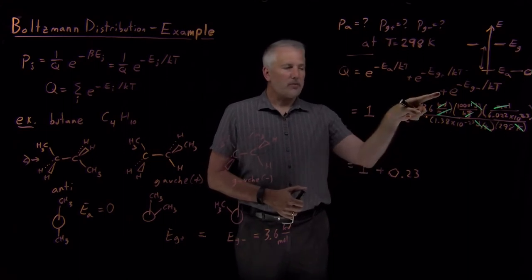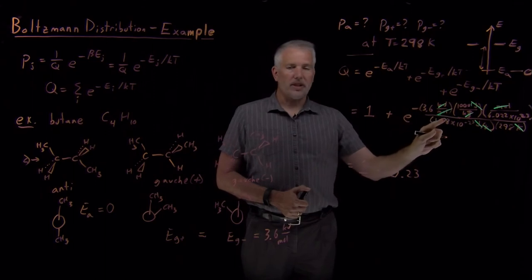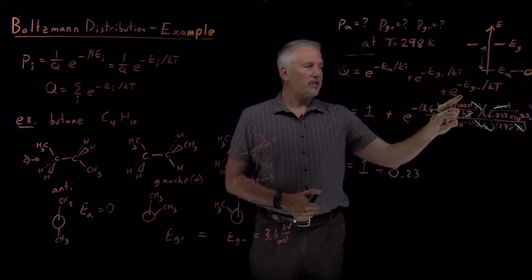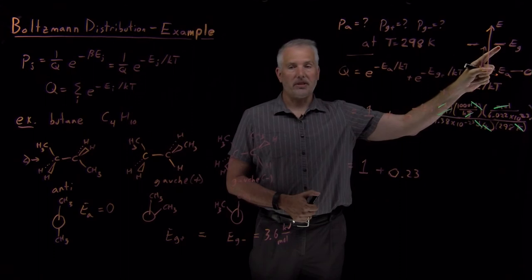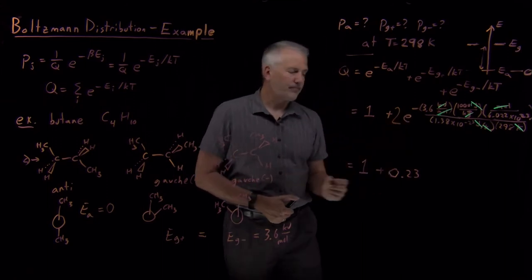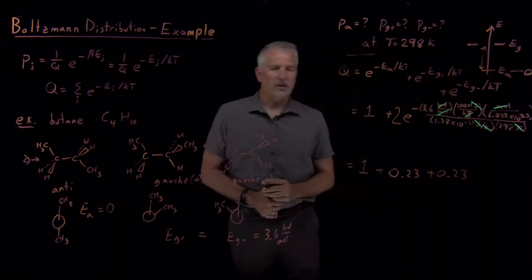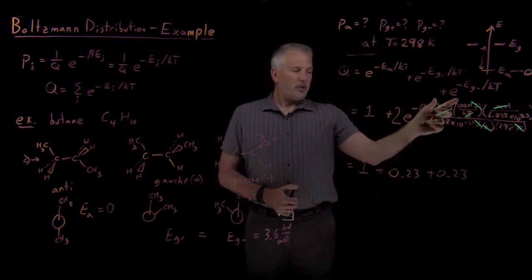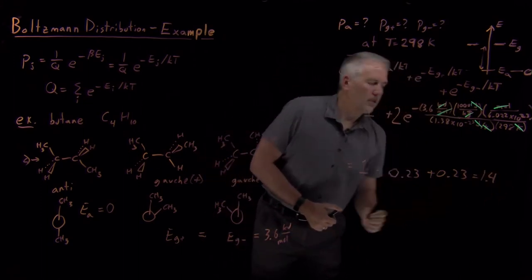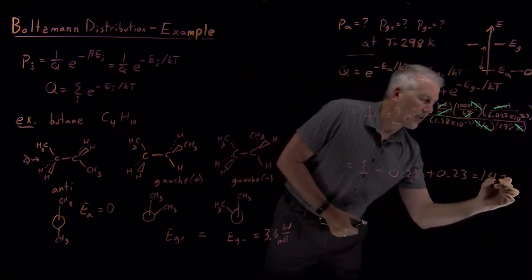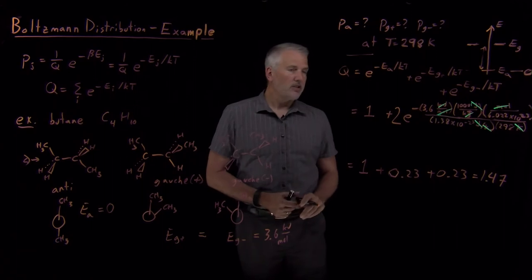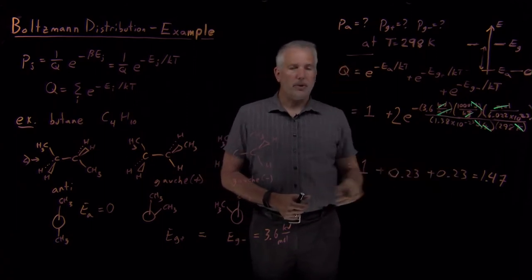I haven't yet considered the third Boltzmann factor, but the Gauche minus energy of 3.6 kJ/mol is exactly the same as the Gauche plus energy, so the third Boltzmann factor is identical to the second — both equal 0.23. Therefore Q equals 1 (for anti) + 0.23 (for Gauche plus) + 0.23 (for Gauche minus), which works out to 1.47.